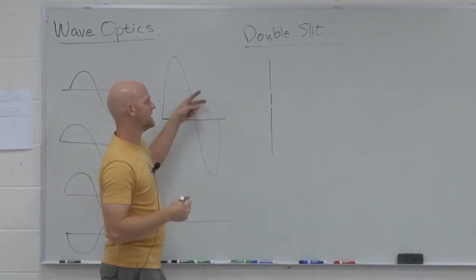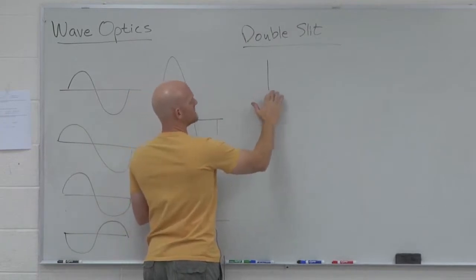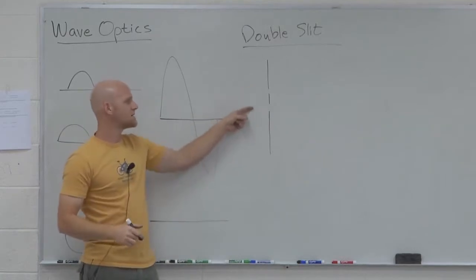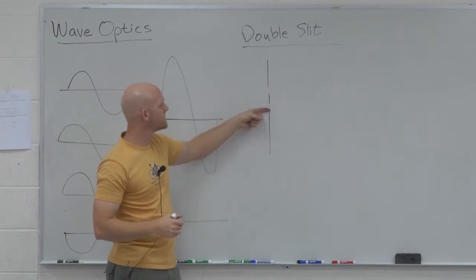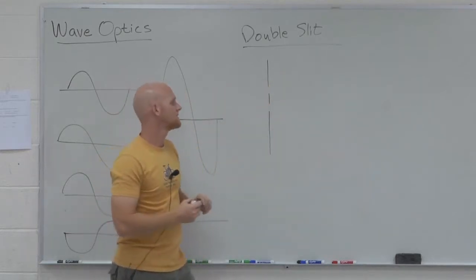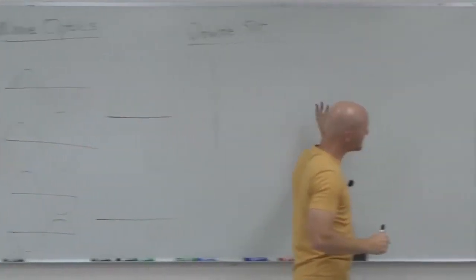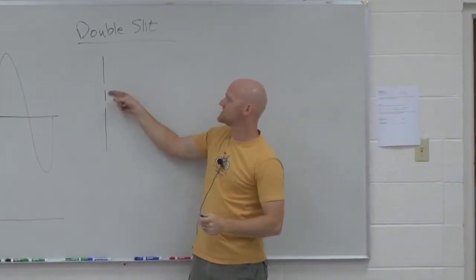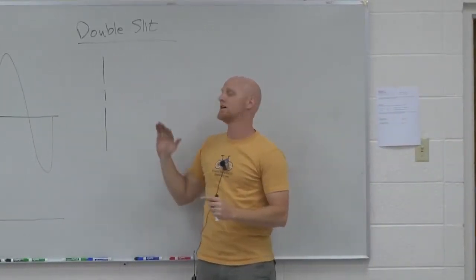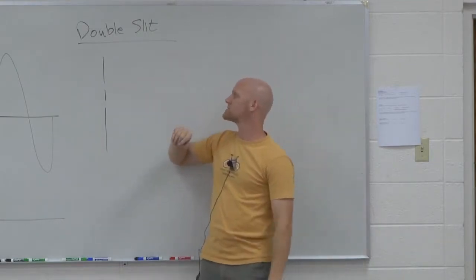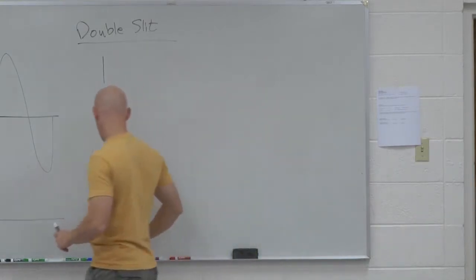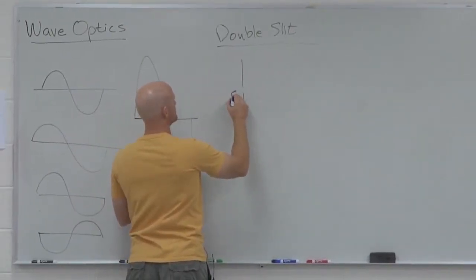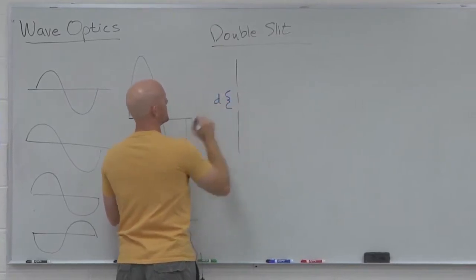We shine monochromatic light through two slits — I'll draw them a little bigger than normal just to emphasize. These two slits are fairly close together typically. When the light shines through, it has two different places where it can pass through the surface. We set up a screen way, way far away compared to the distance between the slits. Everything we do assumes the distance to the screen is much larger than the separation between the slits. We'll call that separation D.